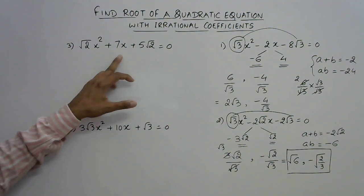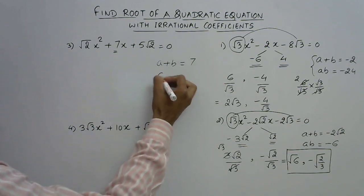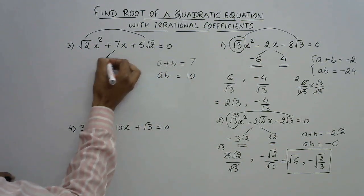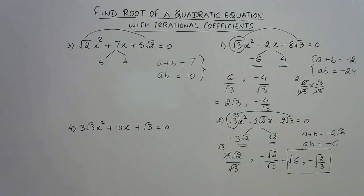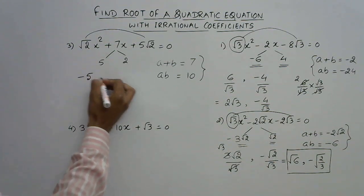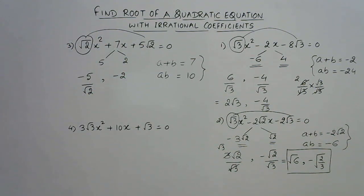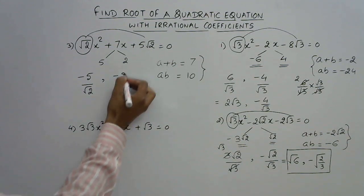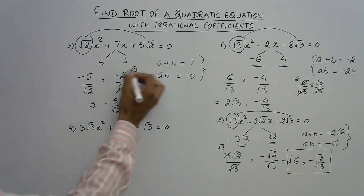The third question is: √2x² + 7x + 5√2 = 0. I need two numbers whose sum is 7 and whose product is 5 × 2 = 10. Very simple — the two numbers are 5 and 2, because 5 + 2 = 7 and 5 × 2 = 10. After the middle term split, change the sign: these become minus 5 and minus 2. Dividing by the coefficient of x², which is √2: minus 5/√2 stays as is, and minus 2/√2 simplifies — √2 cancels with 2 giving minus √2. So the answers are minus 5/√2 and minus √2.